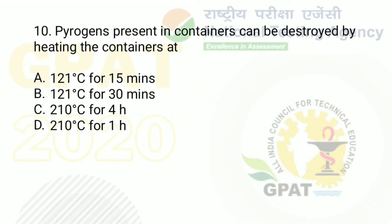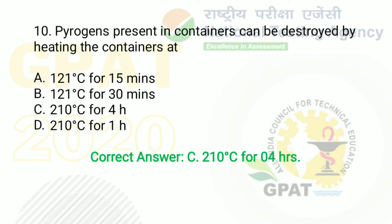The question: pyrogens present in a container can be destroyed by heating the container at. Option A: 121°C for 15 minutes. Option B: 121°C for 30 minutes. Option C: 210°C for 4 hours. Option D: 210°C for 1 hour. The right answer is option C — 210°C for 4 hours.